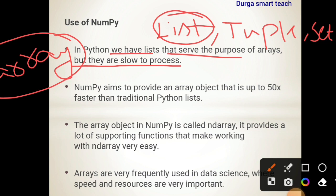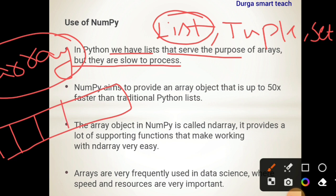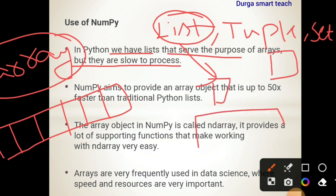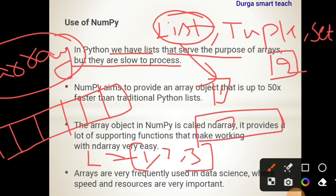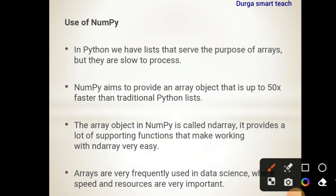Array stores only homogeneous elements, and these elements are stored in continuous memory locations. Whereas in a list, the elements are stored in different memory locations. For example, if L equals [1, 2, 3], then 1 is stored in one memory location, 2 in another, and 3 in yet another. In an array, the elements are stored in continuous memory locations. So lists are slow to process because elements are stored in different memory locations.